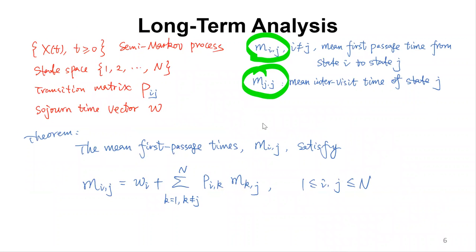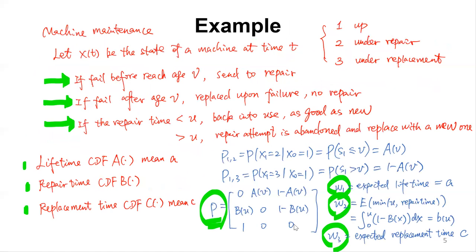As we can see, this process is defined by the transition probability matrix and the w values — the mean sojourn time vector.